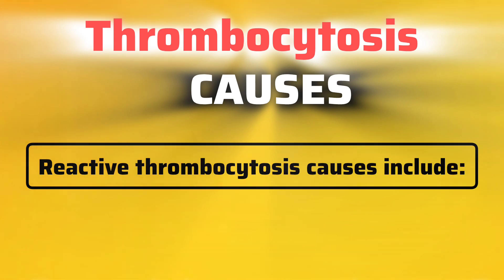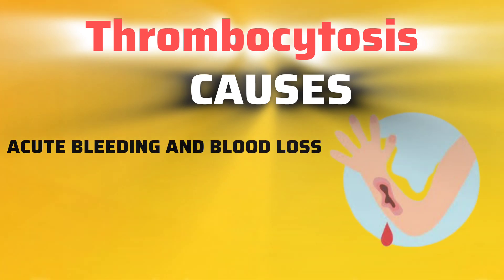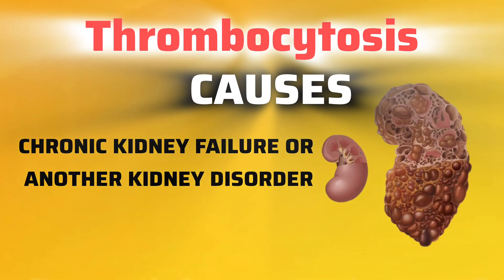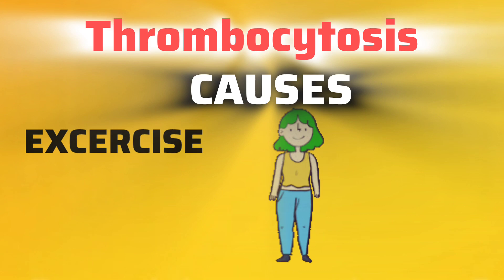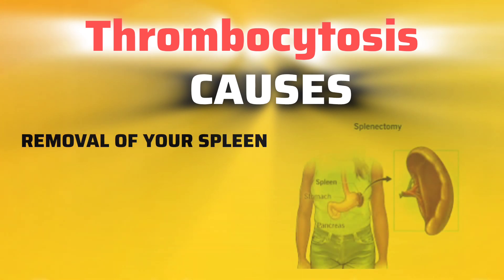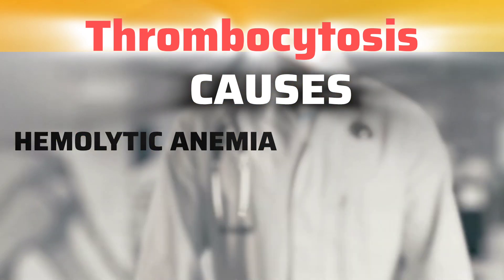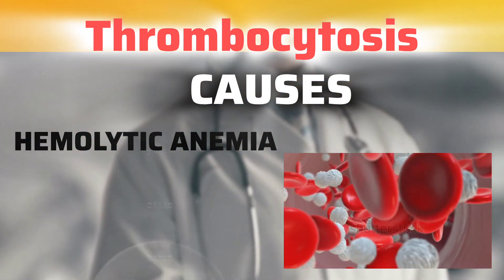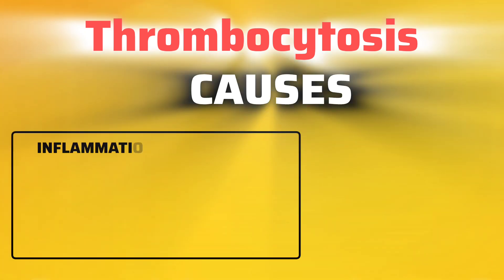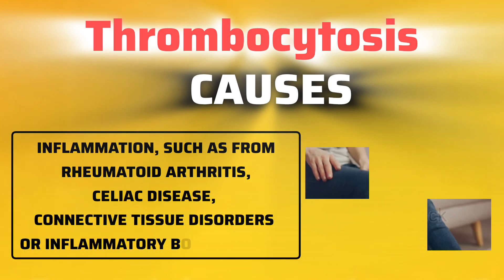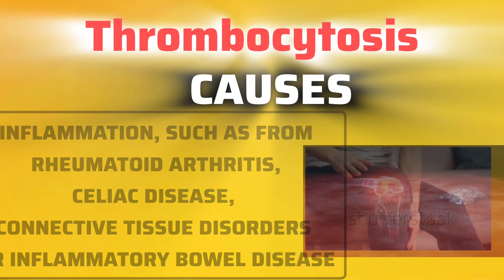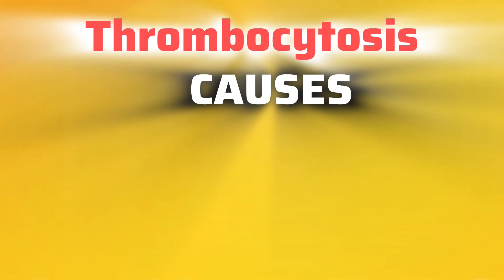Reactive thrombocytosis causes include: acute bleeding and blood loss, allergic reactions, cancer, chronic kidney failure or another kidney disorder, exercise, heart attack, infections, iron deficiency anemia, removal of your spleen, hemolytic anemia — a type of anemia in which your body destroys red blood cells faster than it produces them, often due to certain blood diseases or autoimmune disorders — inflammation such as from rheumatoid arthritis, celiac disease, connective tissue disorders or inflammatory bowel disease, major surgery, pancreatitis, and trauma.